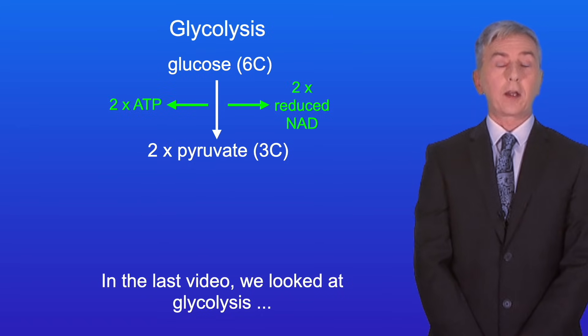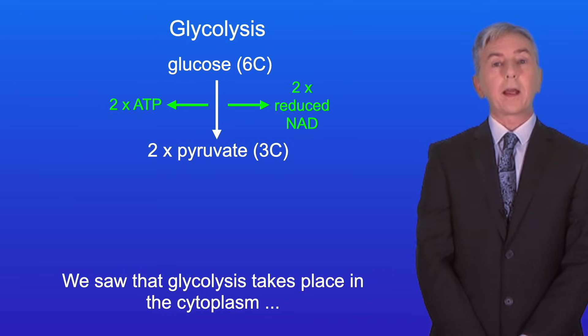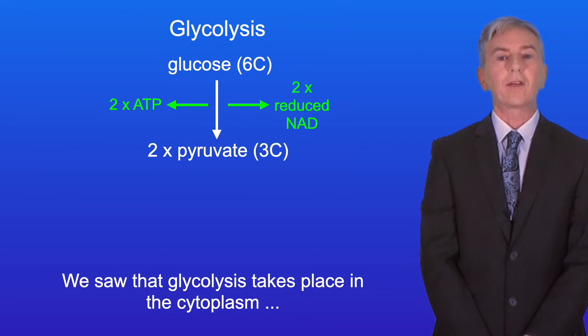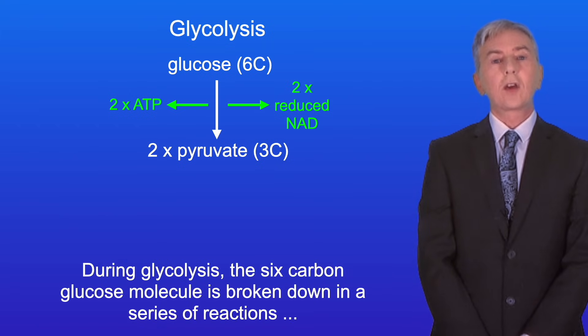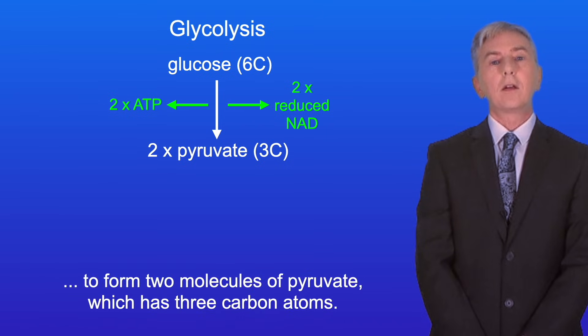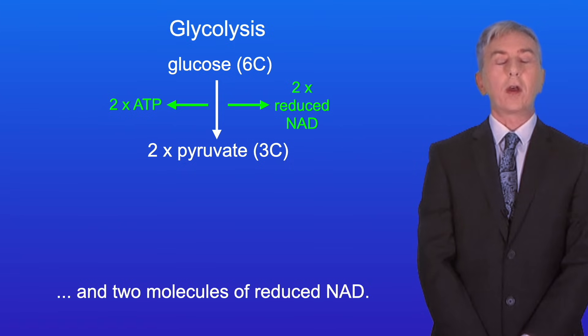In the last video we looked at glycolysis, which is the first stage of respiration. We saw that glycolysis takes place in the cytoplasm and does not require oxygen. During glycolysis the six carbon glucose molecule is broken down in a series of reactions to form two molecules of pyruvate, which has three carbon atoms. During glycolysis we produce a net yield of two ATP molecules and two molecules of reduced NAD.